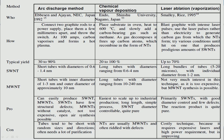The next method is chemical vapor deposition (CVD). Place the substrate in an oven and heat to 600 degrees Celsius, then slowly add a carbon-bearing gas such as methane. As the gas decomposes, it produces carbon nanotubes. The yield is 20 to 100%, and you can get long tubes with a diameter of 10 to 240 nanometers. It is the easiest method to scale up to industrial production, and purity is high.